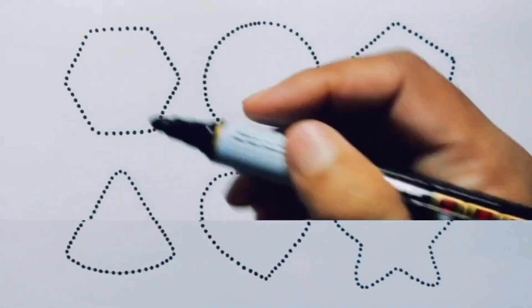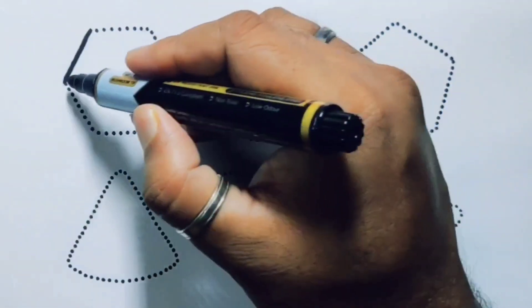Now let's learn the 2D shapes: hexagon, circle, pentagon, triangle, heart, and star. First you're going to draw the shapes.